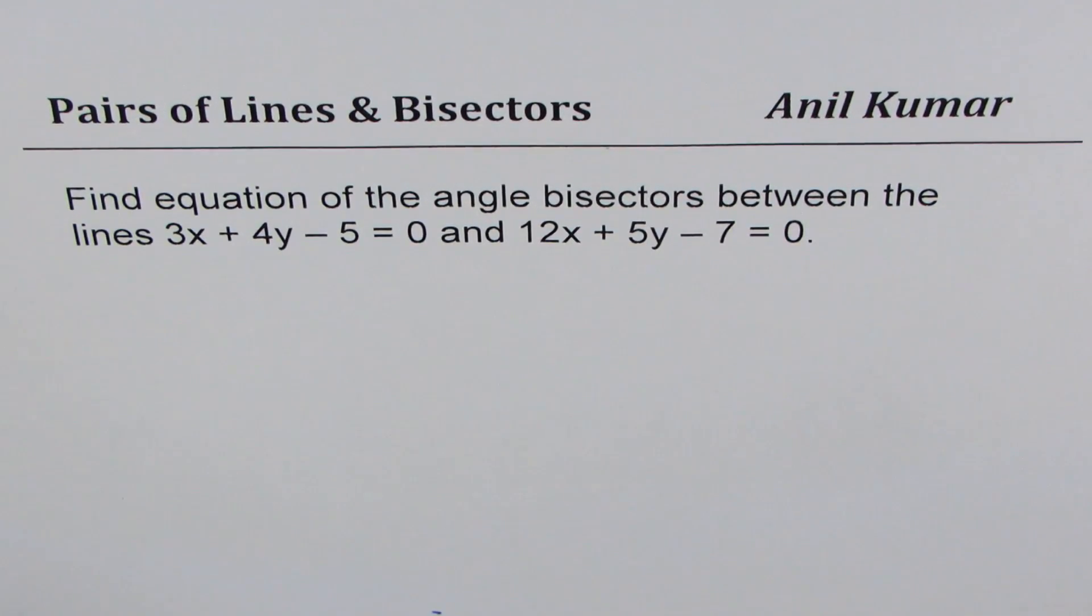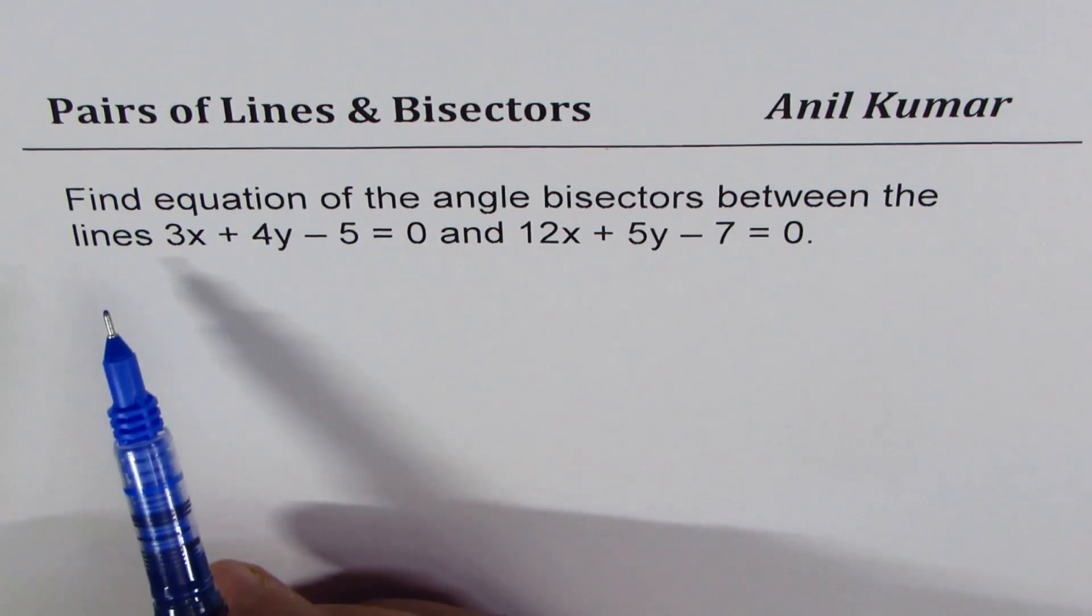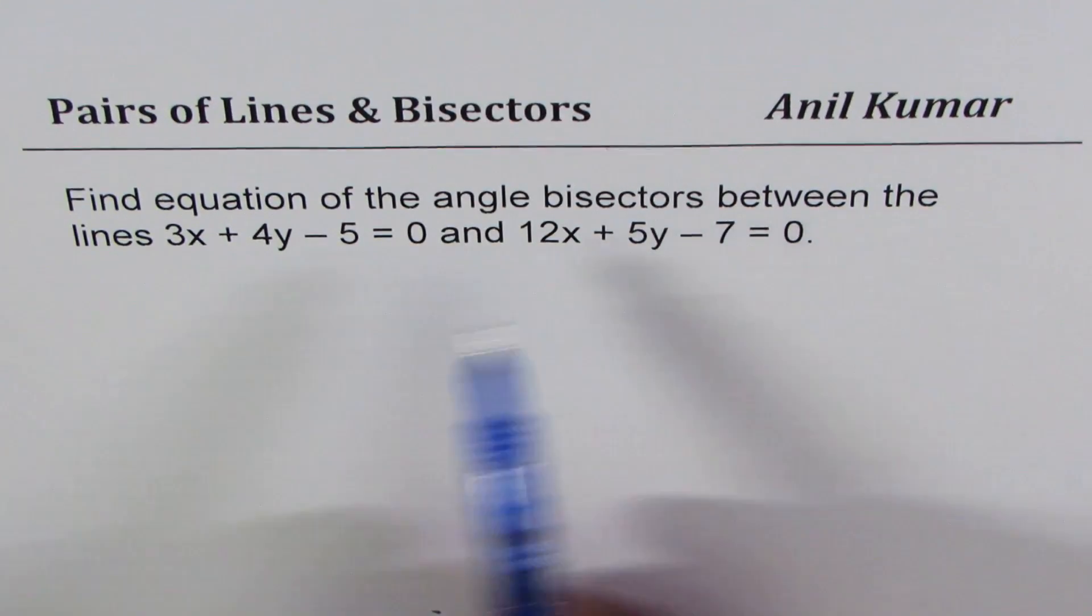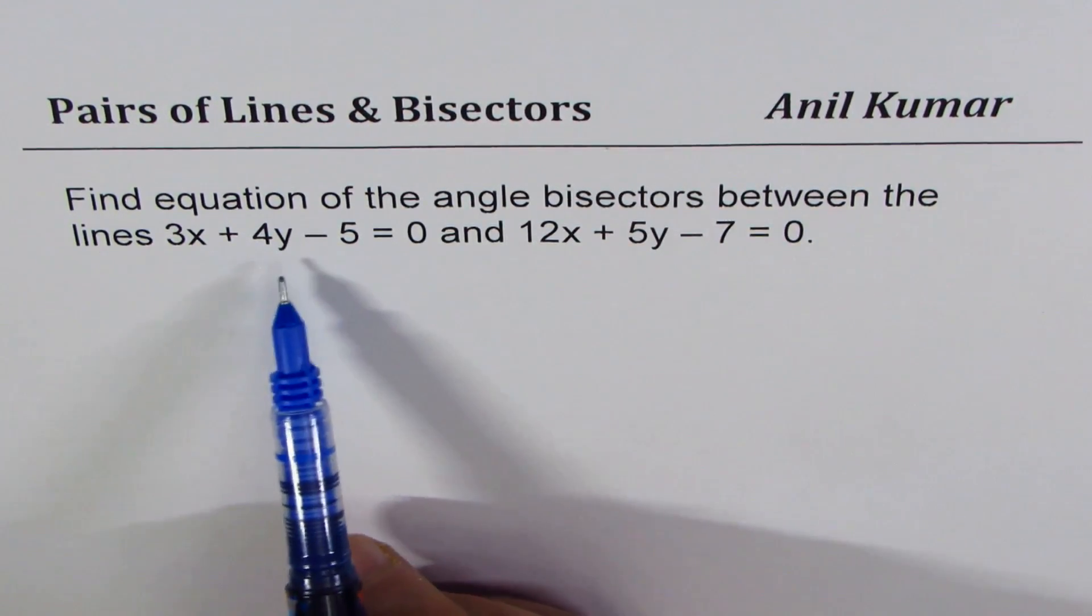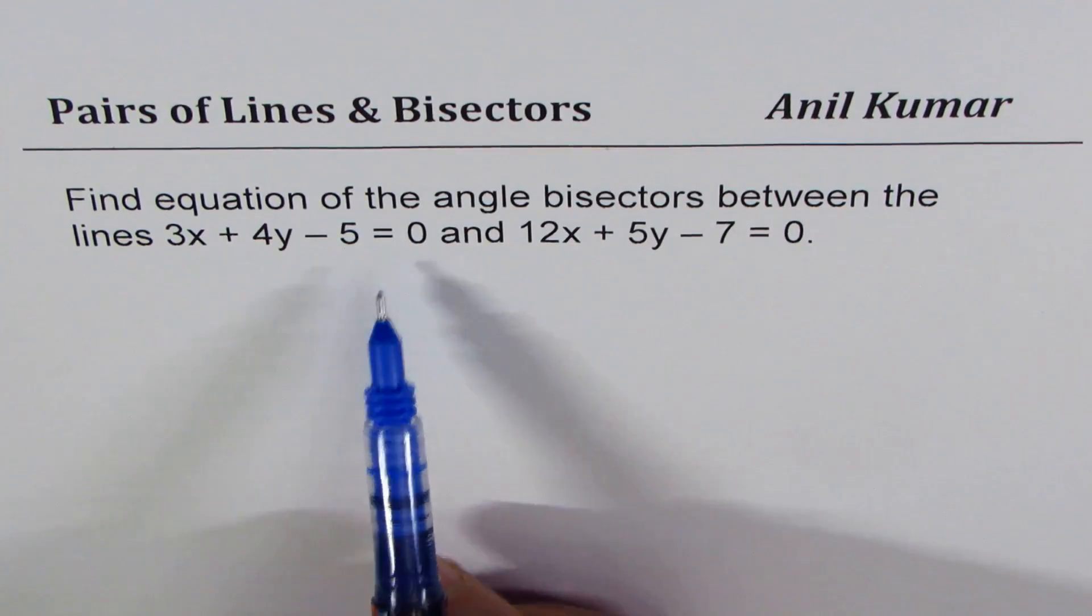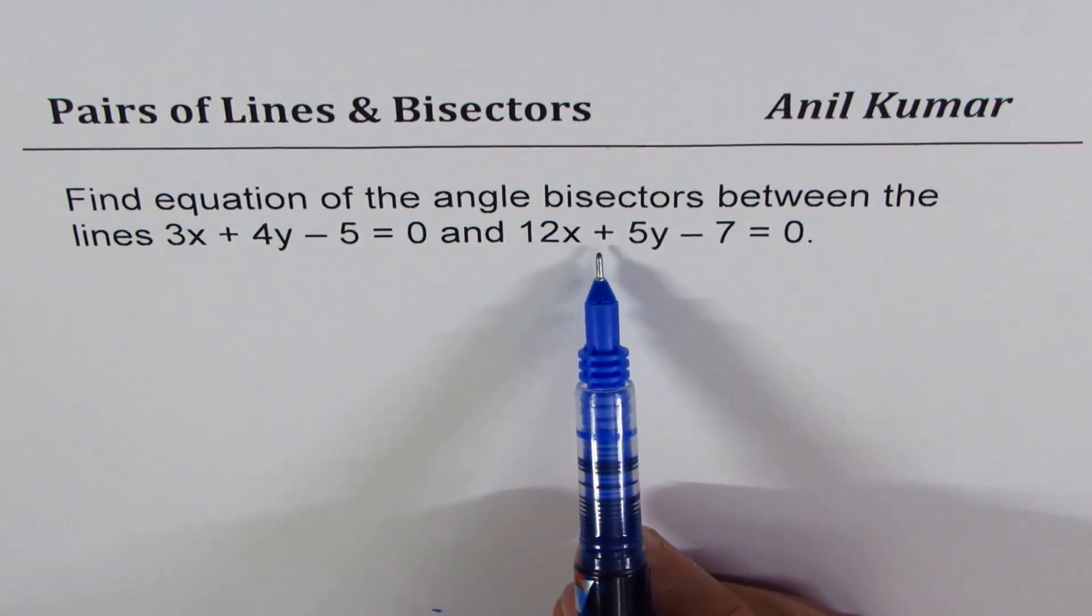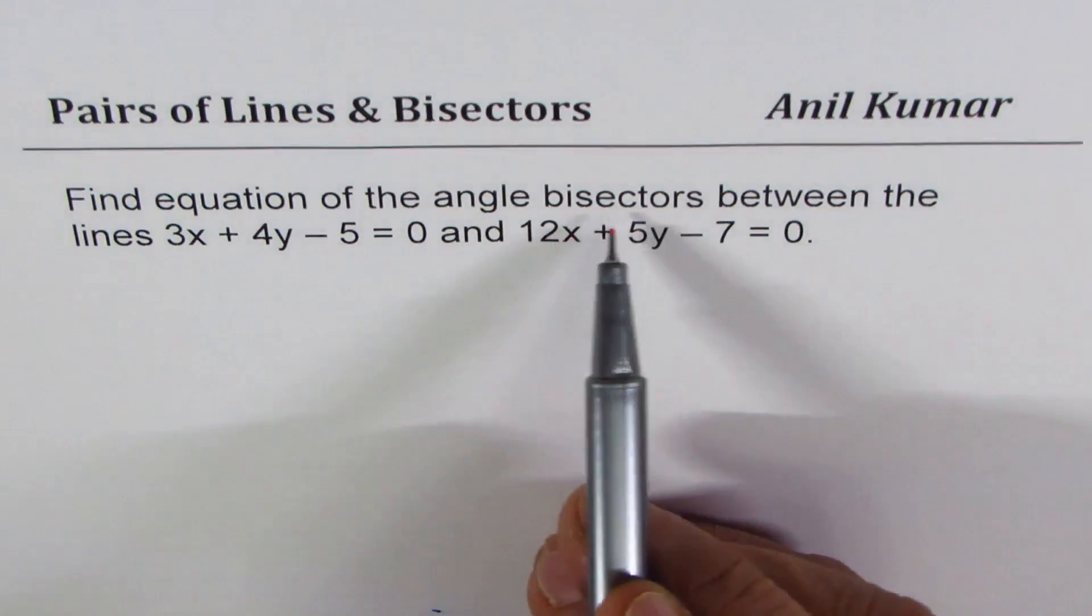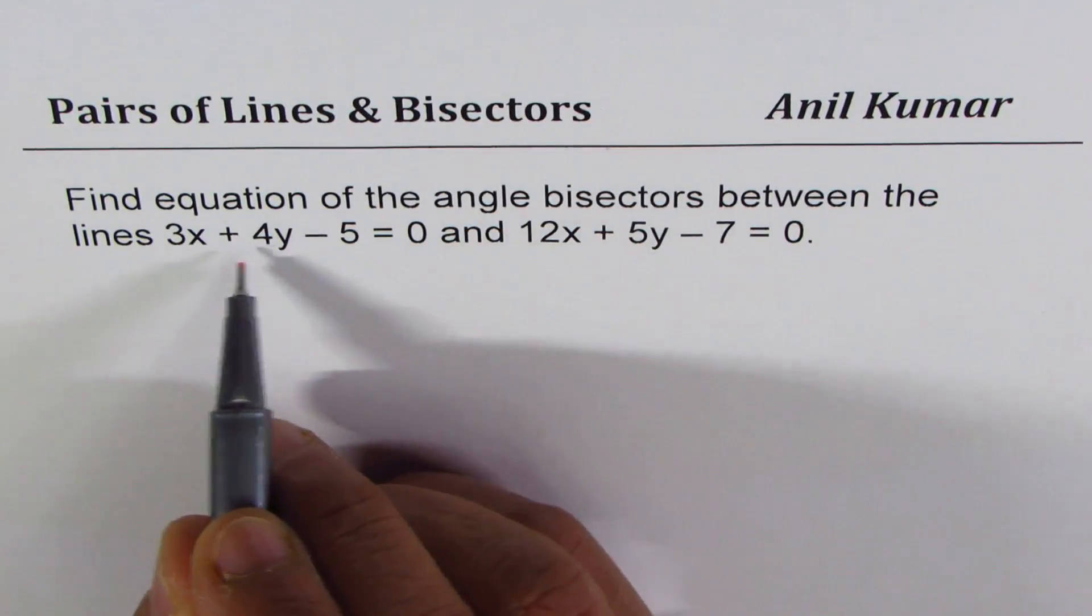I'm Anil Kumar sharing with you another video on pairs of lines and bisectors. The problem here is: find equation of the angle bisectors between the lines 3x + 4y - 5 = 0 and 12x + 5y - 7 = 0.